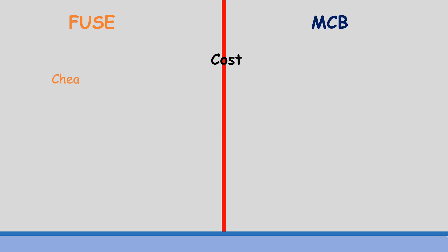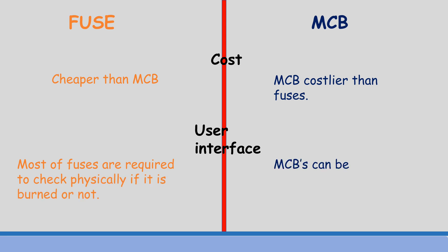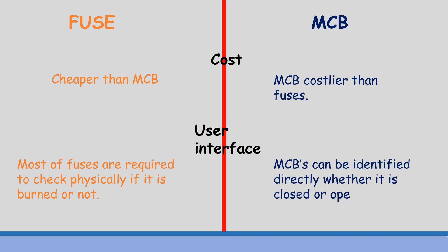Fuses are cheaper than MCBs, while MCBs are costlier than fuses. Most fuses are required to be checked physically to determine if they are burned or not. MCBs can be identified directly whether they are closed or open by the position of the switching knob.